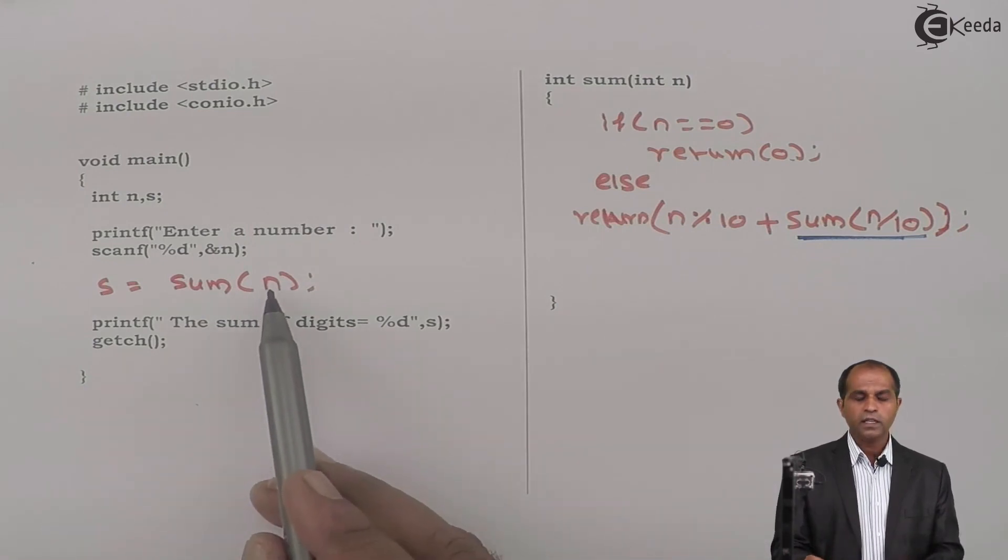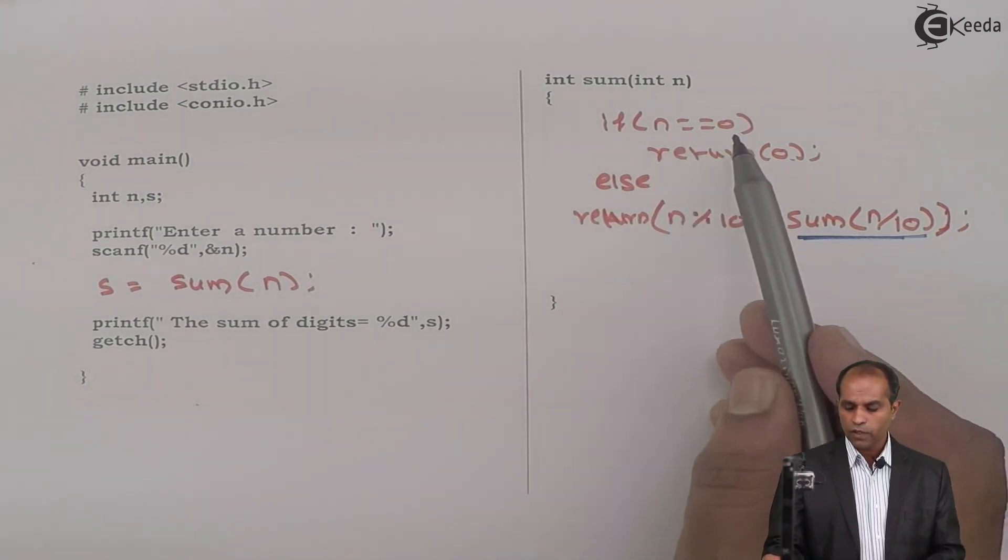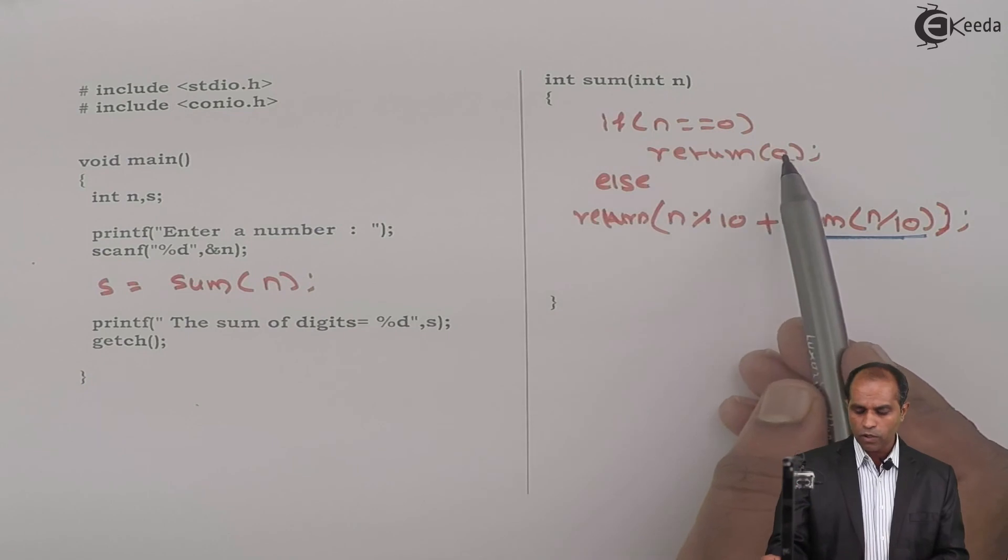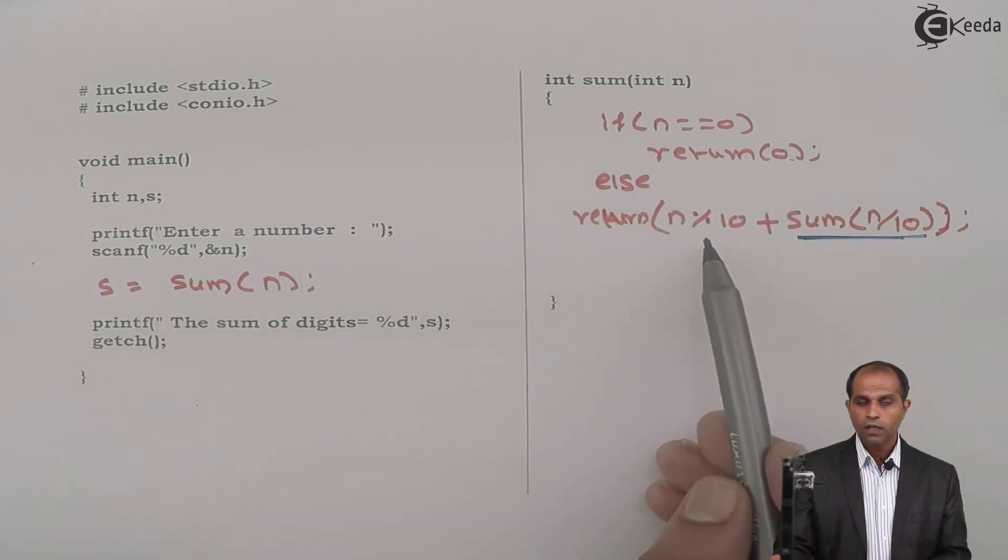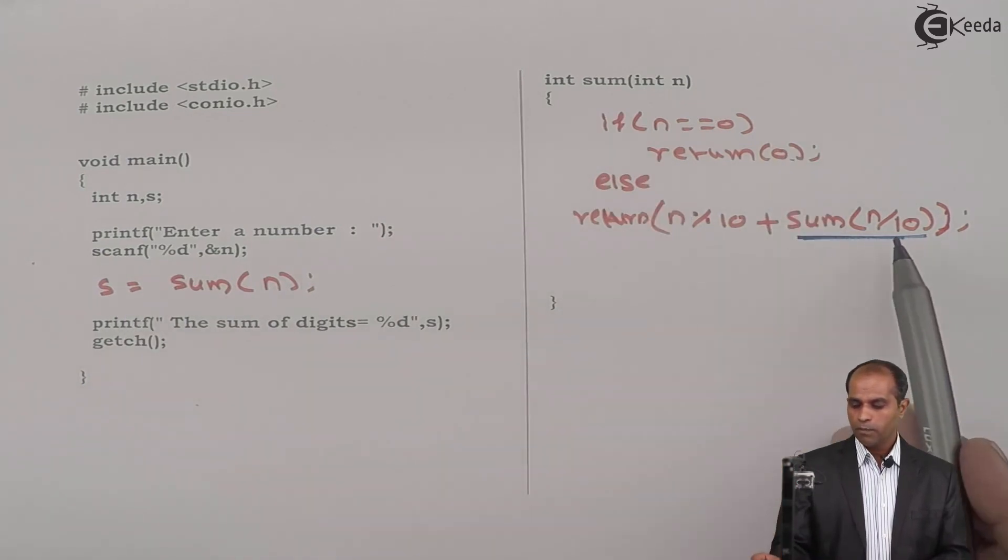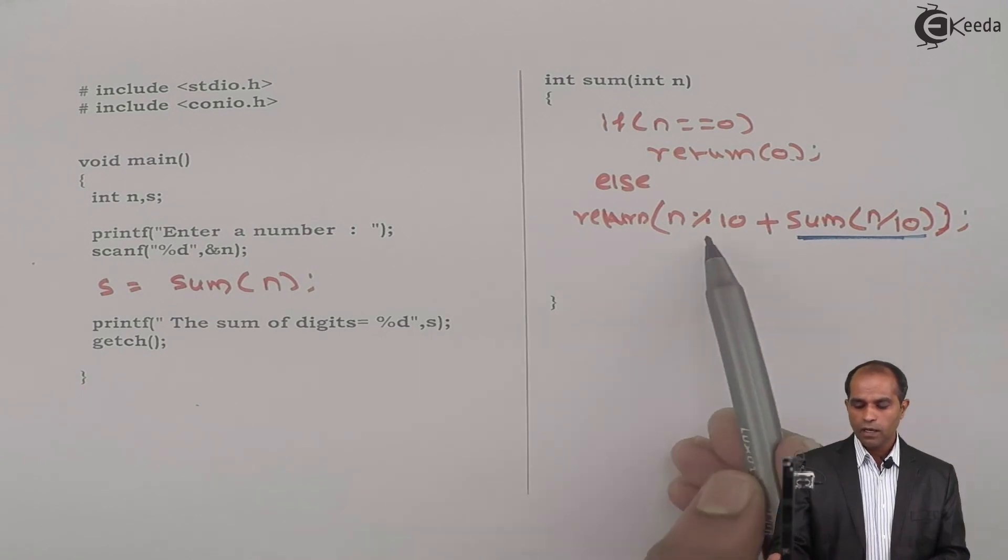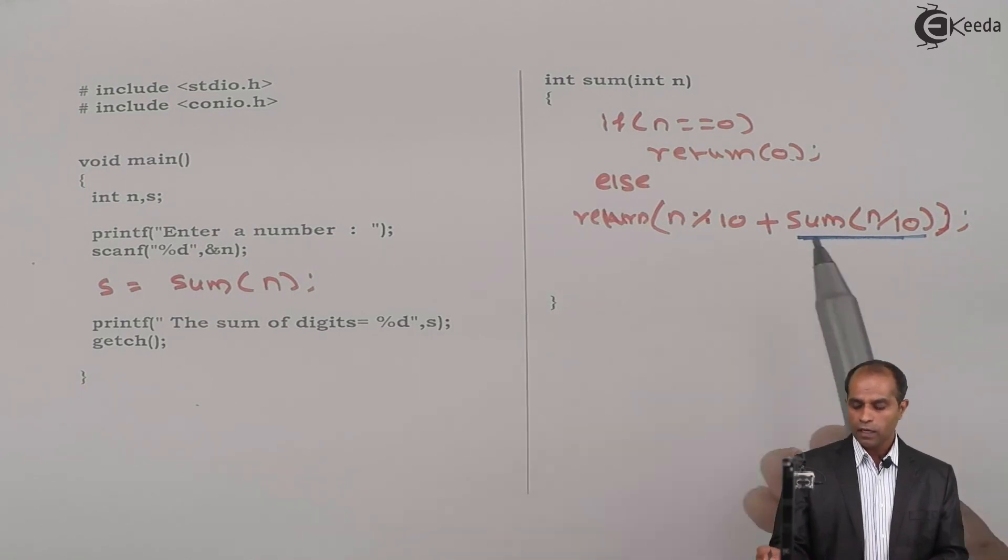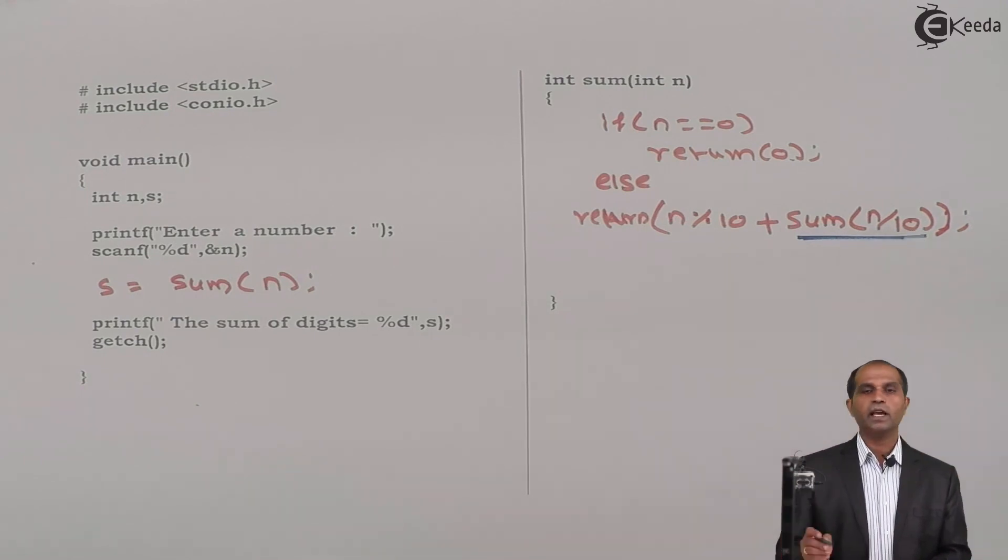So simple. Get the number. Check if the number is 0. If number is 0, return the value 0. If not, keep the last digit. Pass the remaining digits. Last digit can be kept by modding and remaining digits can be sent by n by 10.